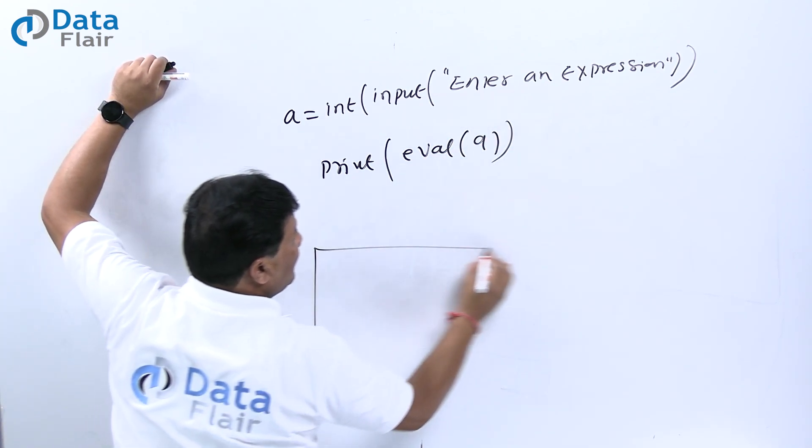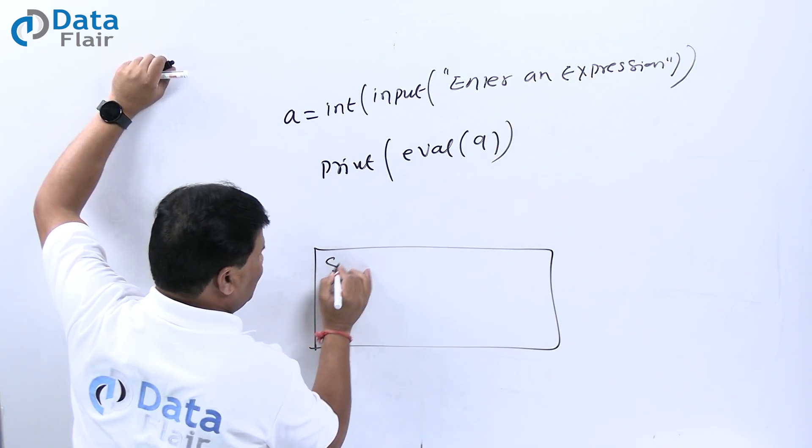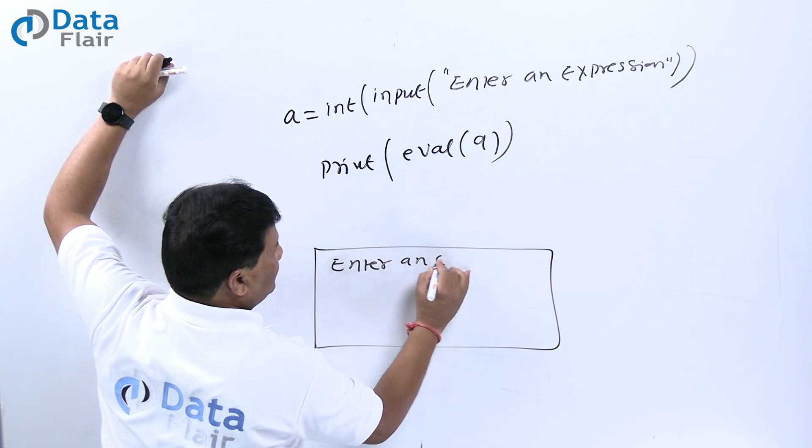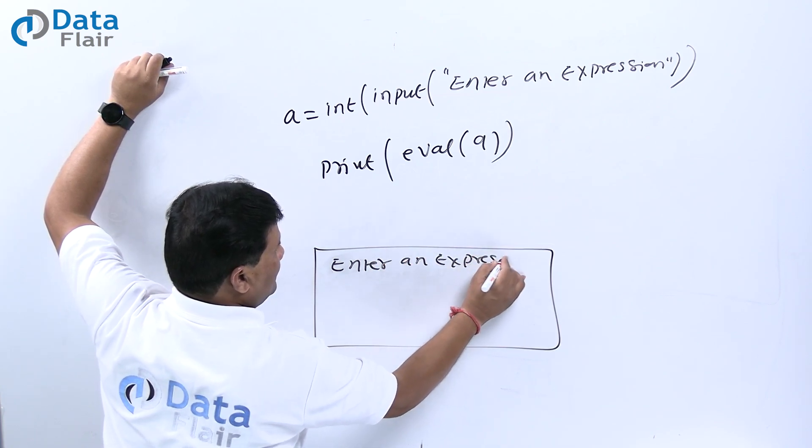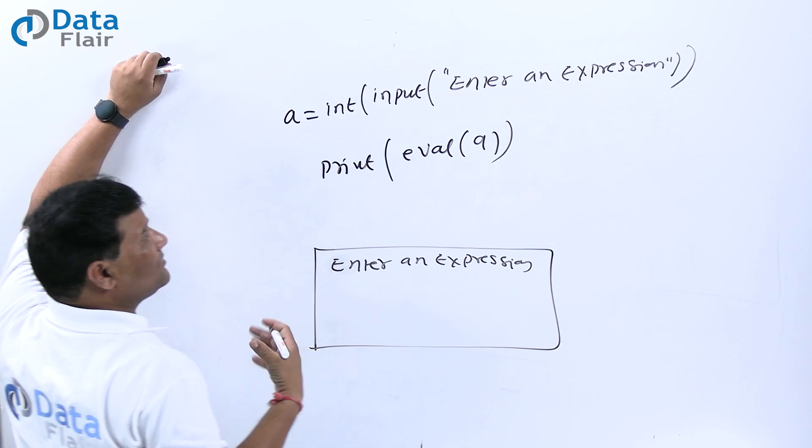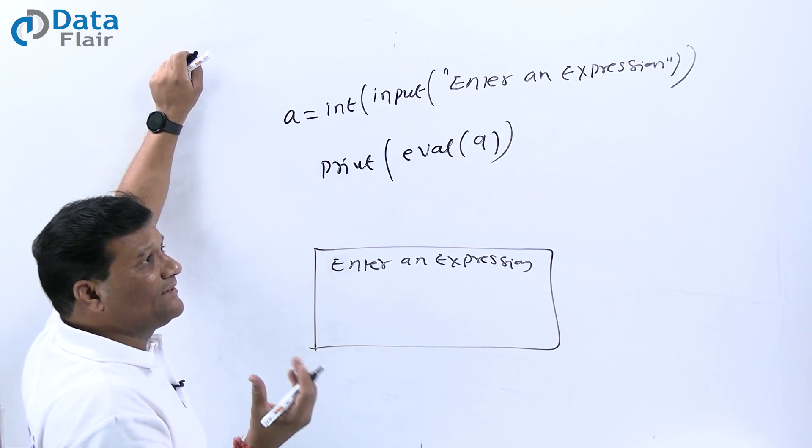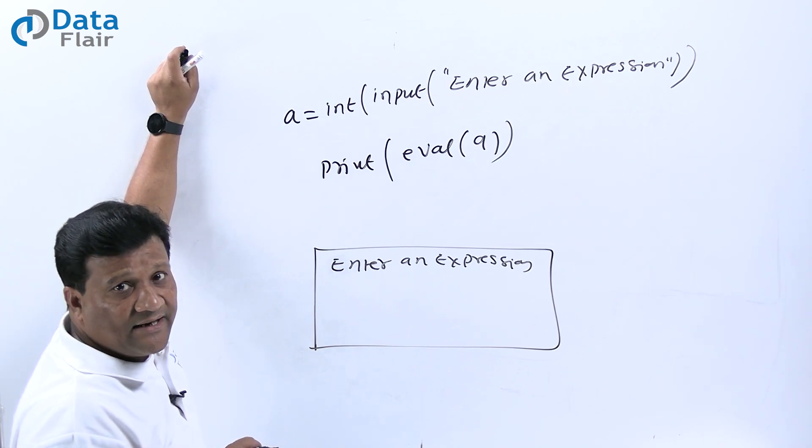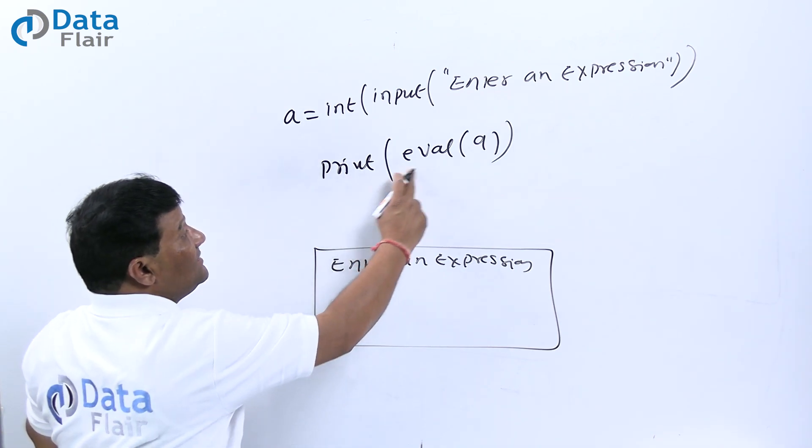At runtime, you can enter any expression like 5 into 1. The message will be 'enter an expression', and you can do any mathematical calculation. When you want to read an expression from user, that time we use this evaluate method.